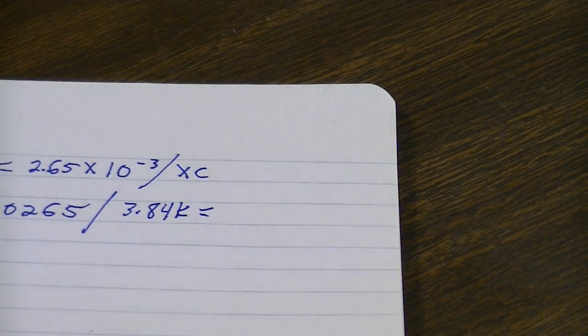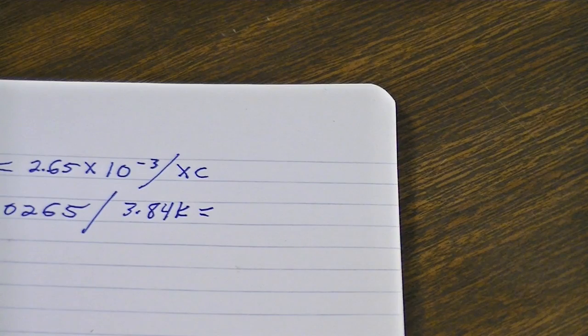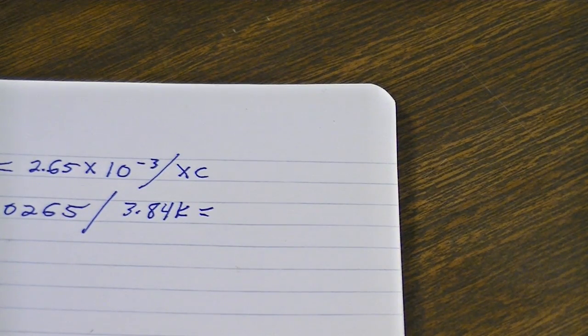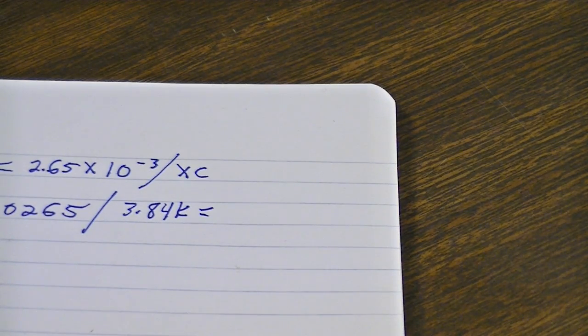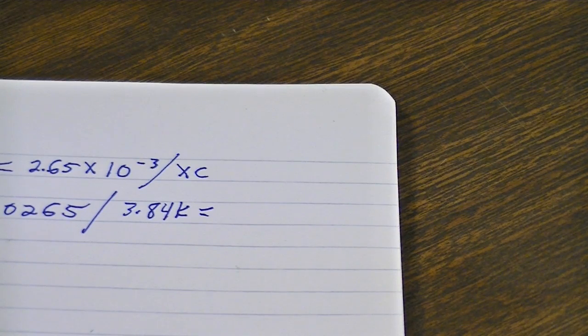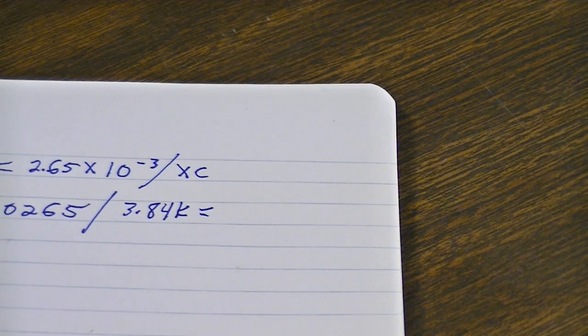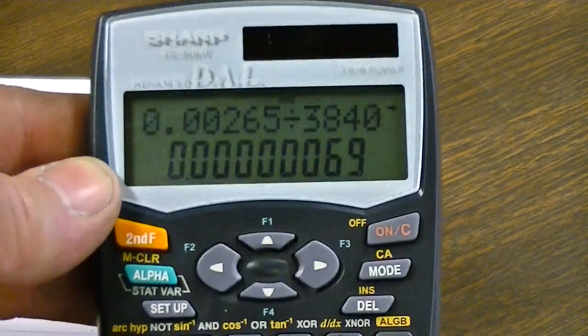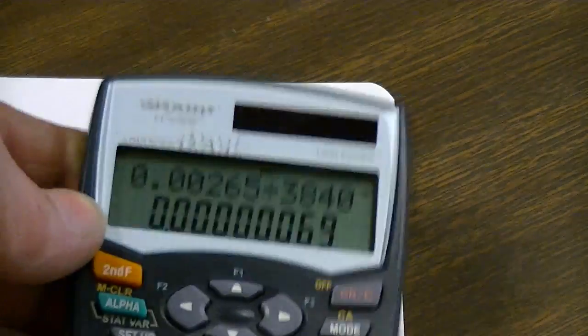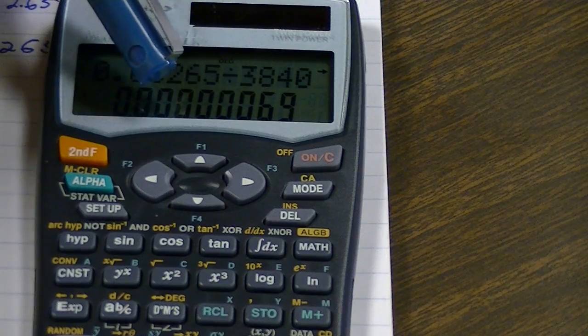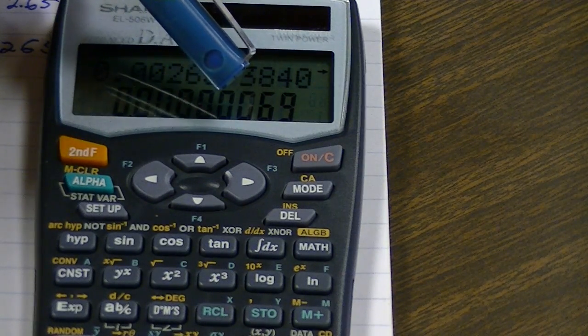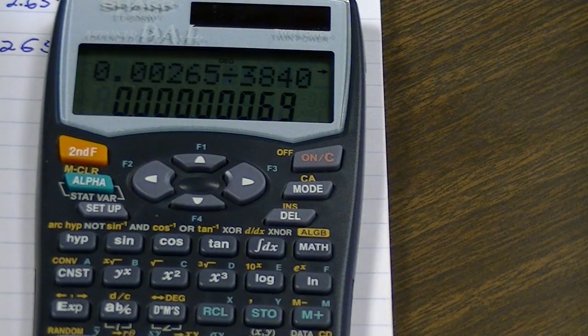So, we'll go .00265 divided by 3.84 kilohms. And, I'm no good at math in my head, that's why they invented calculators. So, here we go. Okay. And, here is what we came up with. Now, you move those decimal points over 6 places. So, I'll get this down on there and we'll count it together. 1, 2, 3, 4, 5, 6. That gives you .69 microfarads.